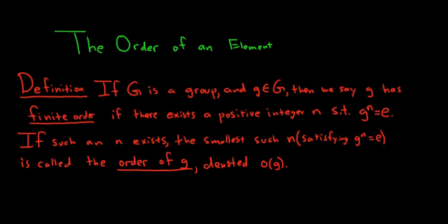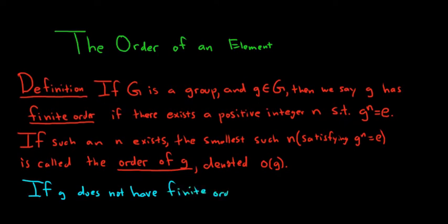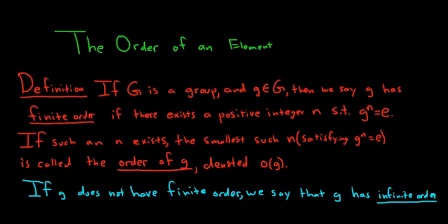If little g does not have finite order — in other words, there is no such n — we say that little g has infinite order, denoted little o of g equal to infinity.